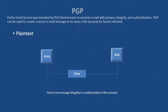PGP — Pretty Good Privacy — was invented by Phil Zimmerman to provide email with privacy, integrity, and authentication. PGP can be used to create a secure email message or to store a file securely for future retrieval.